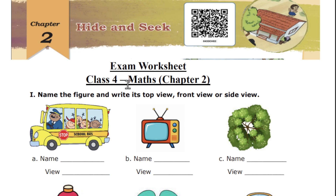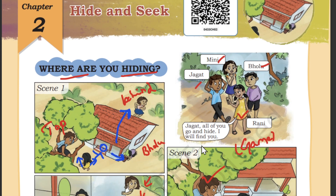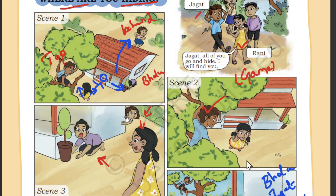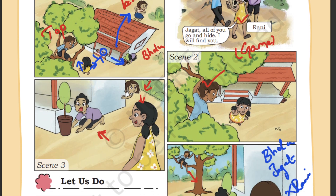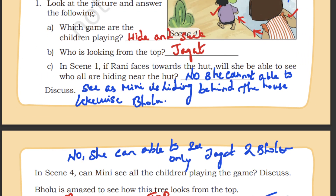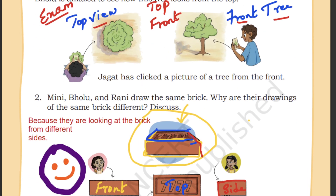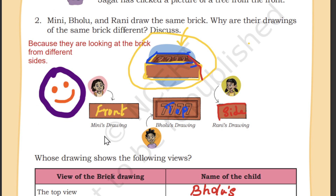In this lesson we learned about the hide and seek game — where we are hiding, like behind or in front of the house, or on top of a tree. We looked at the side view, front view, and how we see an object from different angles. Pictures were given and we found what view each shows — for example, a picture taken from the top angle of a tree is the top view. We also used a brick to find its front view, top view, and side view.